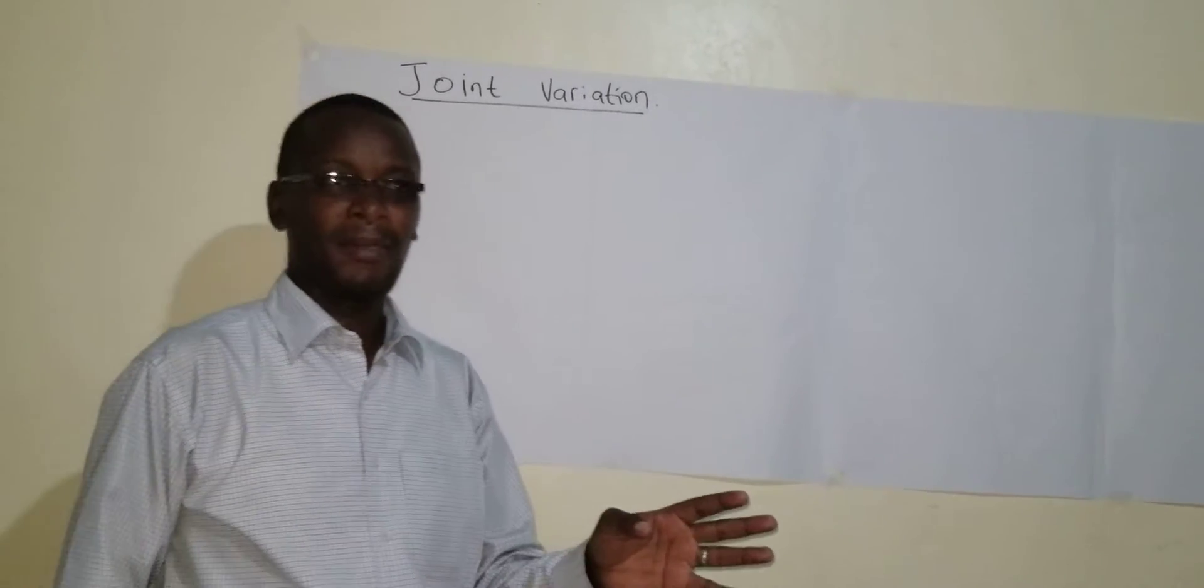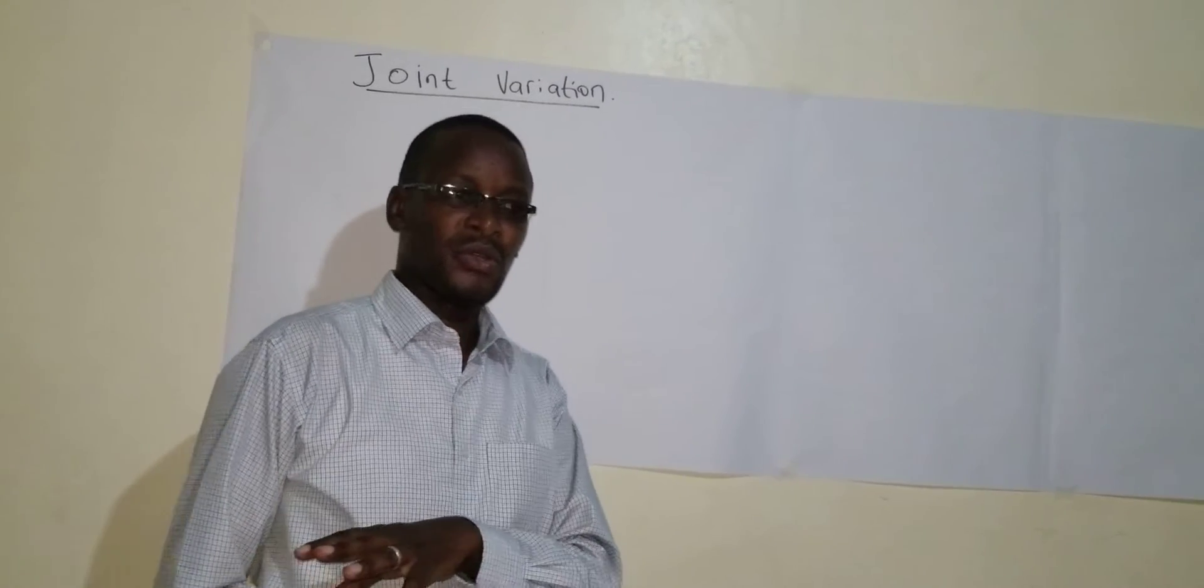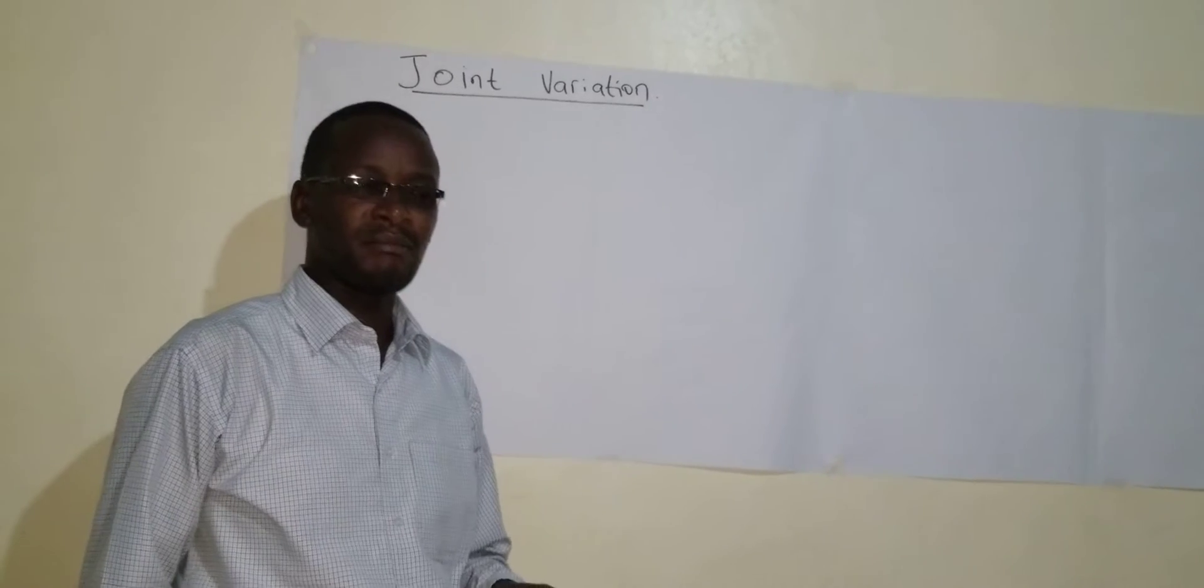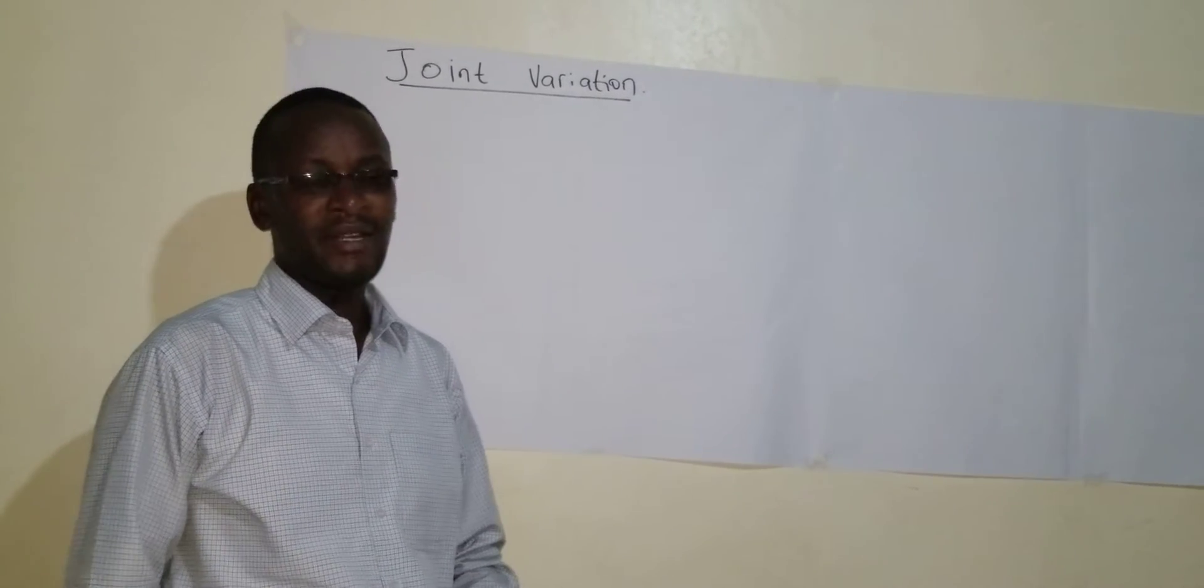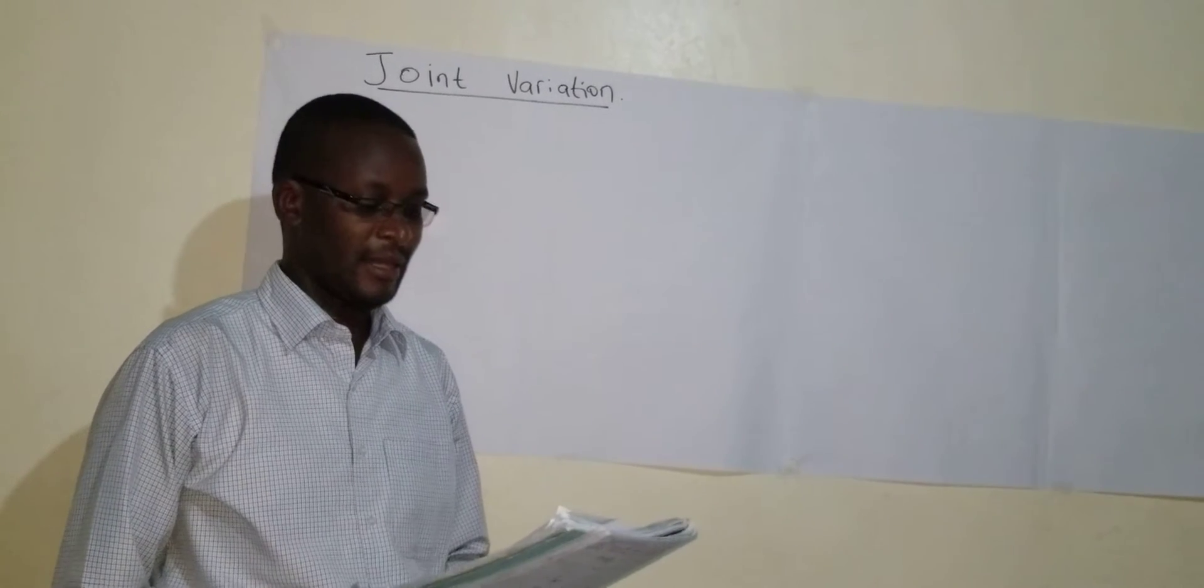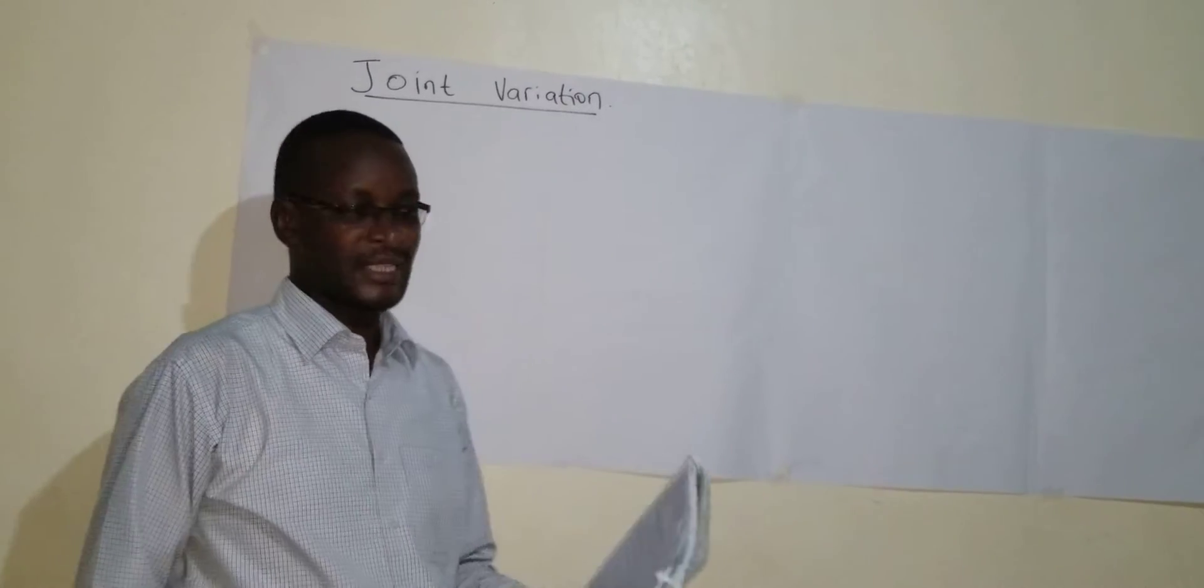So we can have P varying with R and also with Q. So that is why we call it joint. It also combines both direct and inverse. And a very good example of this type of variation is the formula for getting the volume of a cylinder.